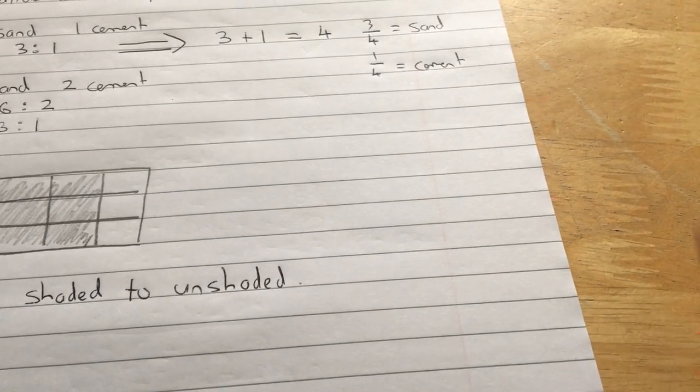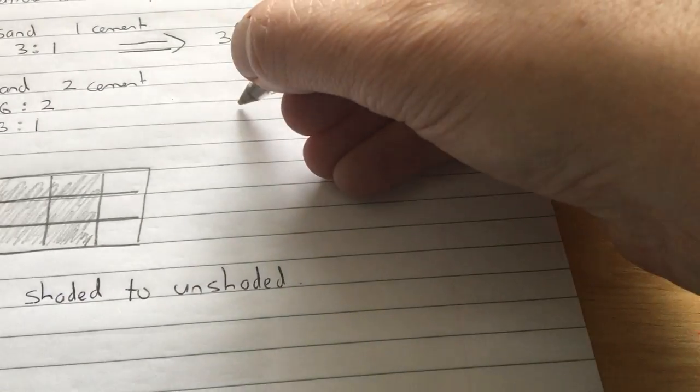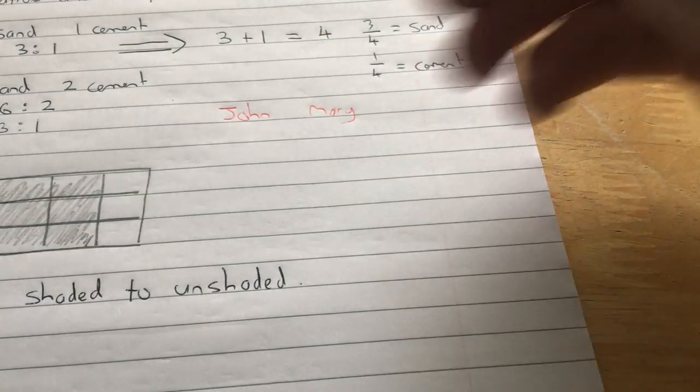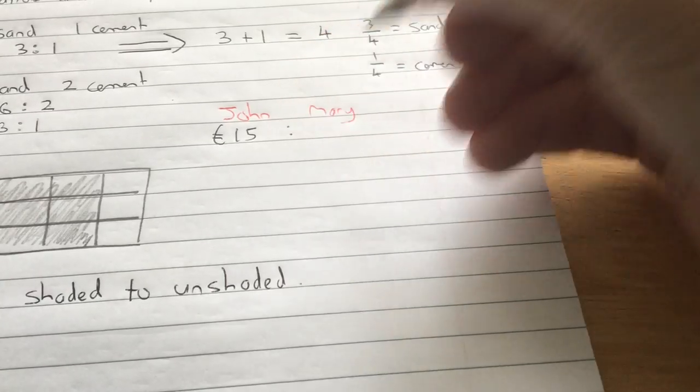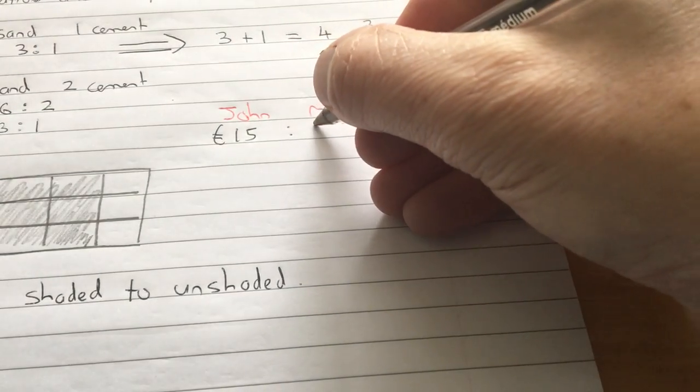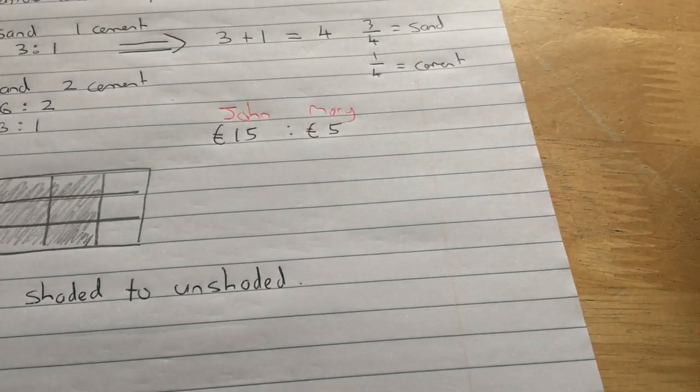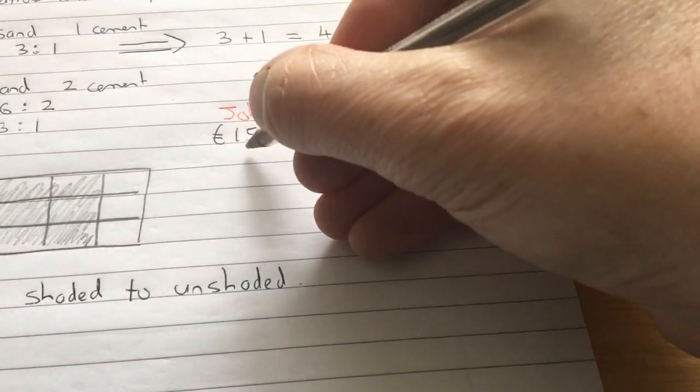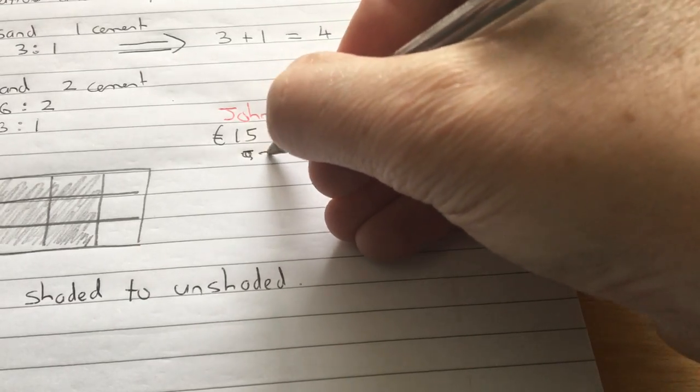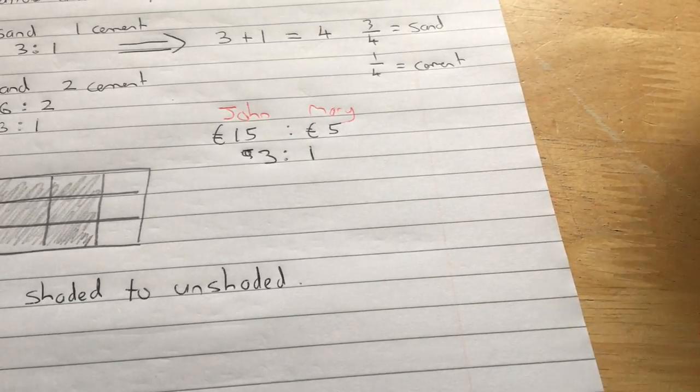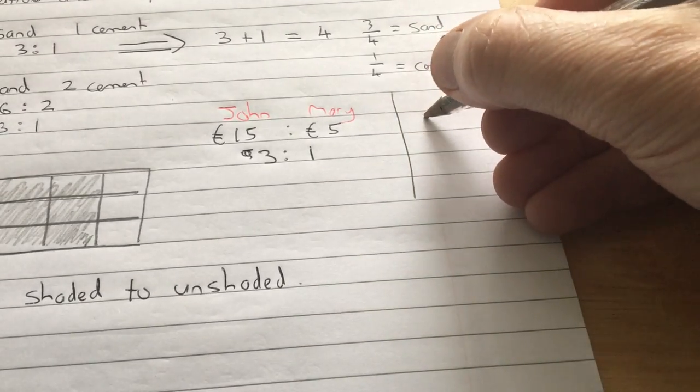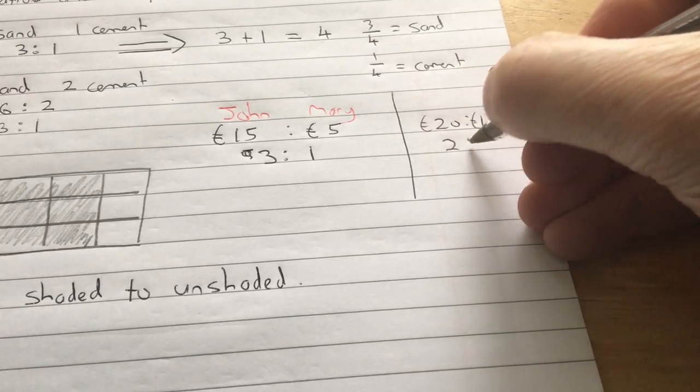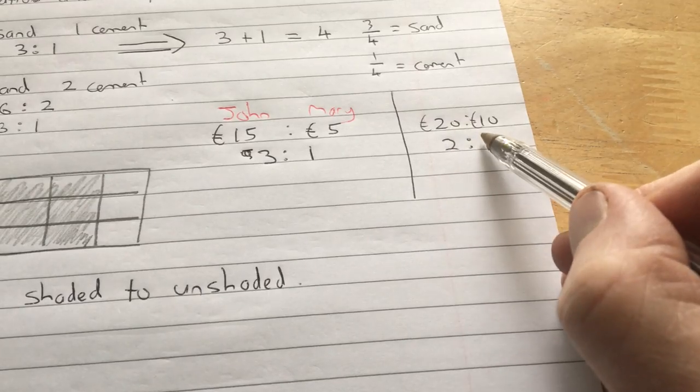Now, you would use ratio a lot in your everyday language. Let's just say you had John and Mary. If John had 15 euro and Mary had five euro, then John has three times as much as Mary. So break that down into the simplest ratio. Find a common denominator. Five goes into 15 three times. So that again is three is to one. Or you might say someone has 20 euro and somebody else has 10 euro. So if you break that into a ratio, that's two is to one. And that makes sense because that person has twice as much as the other person.